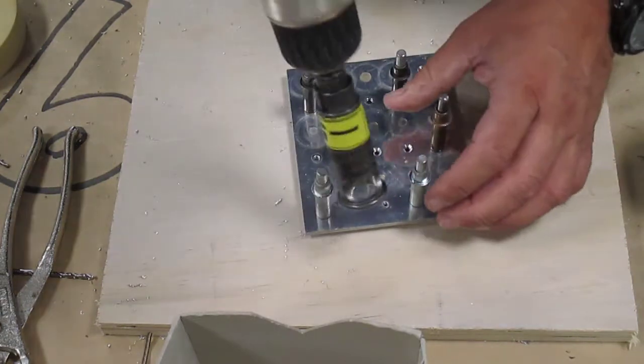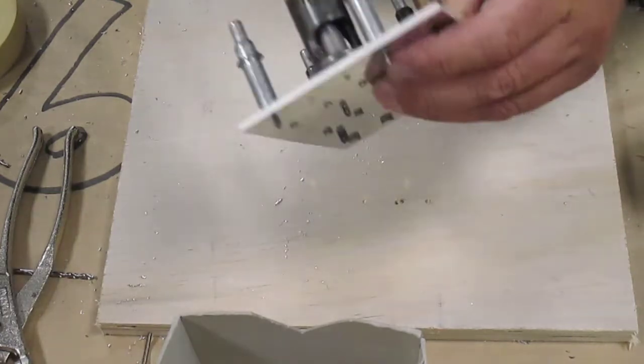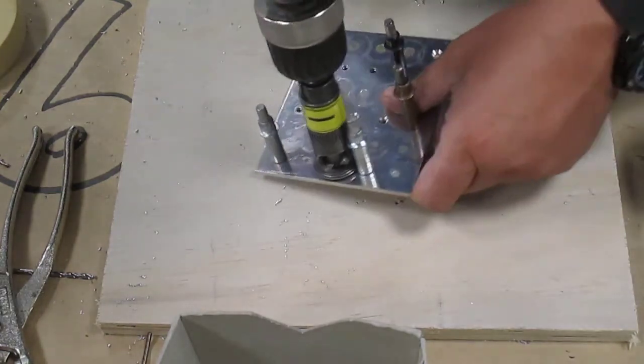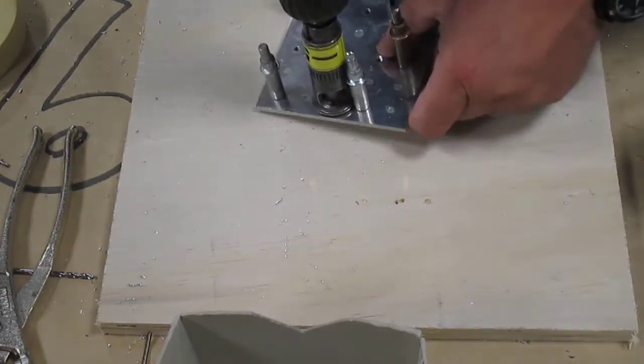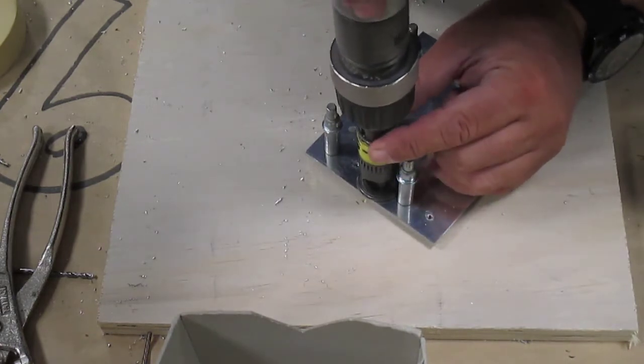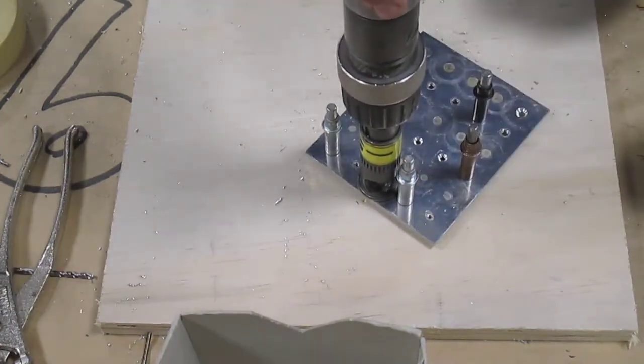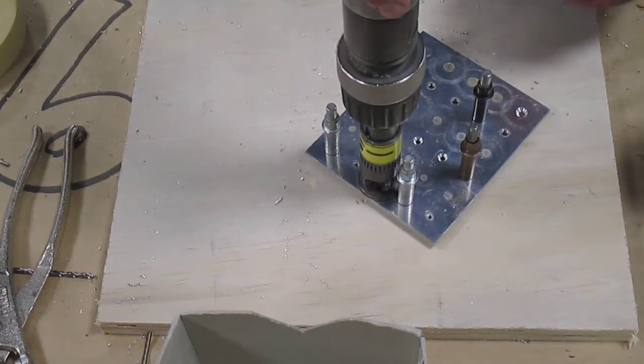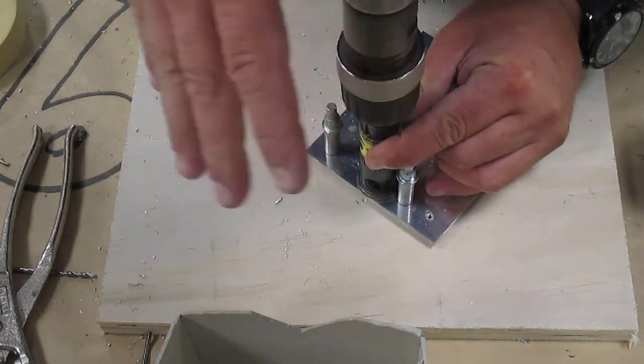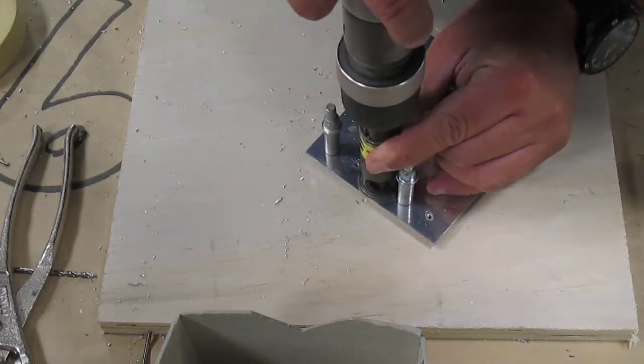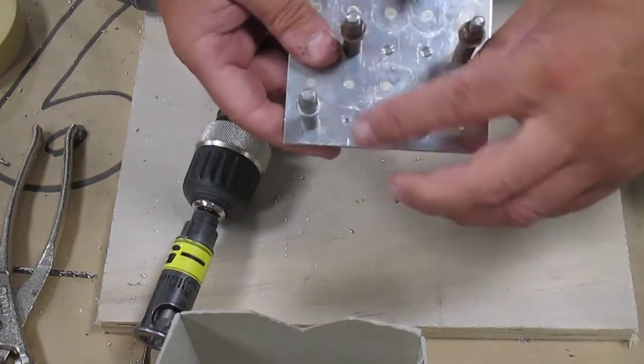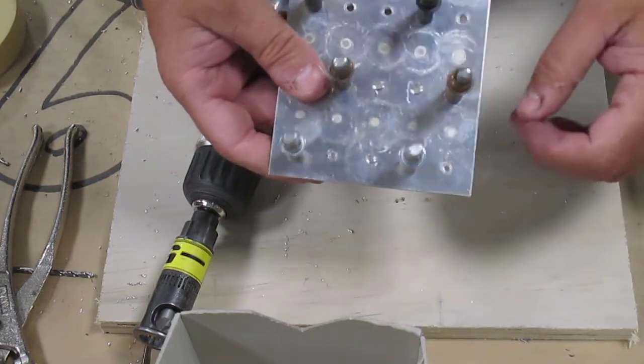Now what I'm going to do is I'm going to put my countersink into the hole. I've got the pilot sitting inside the hole. I'm going to hold on to the shoe, and with light pressure and light medium speed, I'm just going to take and give it a quick little countersink. Actually, that looks pretty nice.